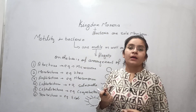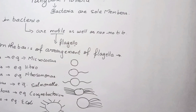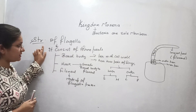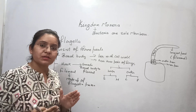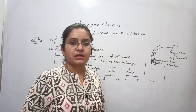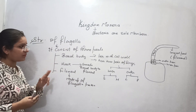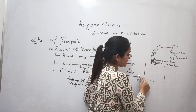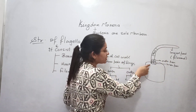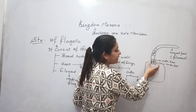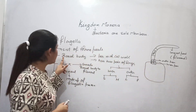Now let's talk about the structure of the flagella found in bacteria that helps in the movement of bacterial cells. The flagella is a whip-like structure that consists of three different parts: basal body, hook, and filament. If this is a bacterial cell, this whip-like structure is the flagella. The portion that is embedded and attached to the bacteria from the cell wall is called the basal body.